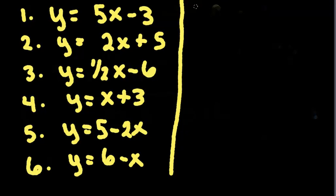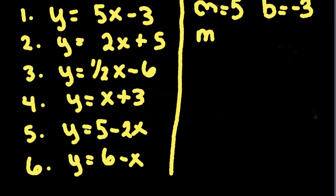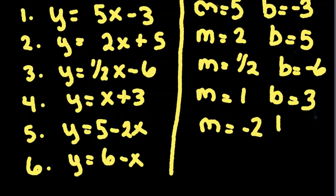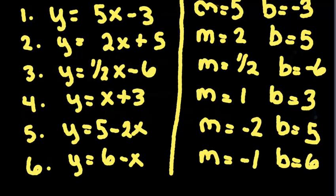We're going to find the m and the b for each one. For number 1, the m is 5, the b is negative 3. Make sure you've paused your computer and do these on your own. For number 2, the m is 2, the b is 5. Number 3, the m is 1 half, the b is negative 6. Number 4, the m is 1, the b is 3. Number 5, the m is negative 2, and the b is 5. Number 6, the m is negative 1, and the b is 6. So pause the computer again, check your answers, and then we will do one more set for you to practice.